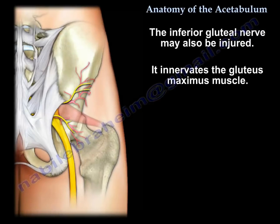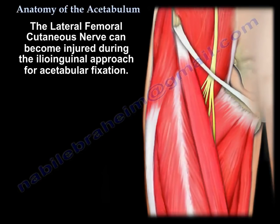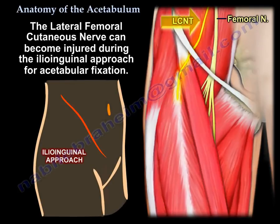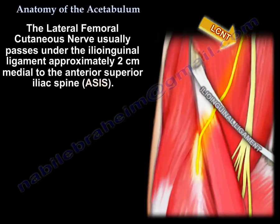The inferior gluteal nerve may also be injured; it innervates the gluteus maximus muscle. The lateral cutaneous nerve of the thigh can be injured during an ilioinguinal approach. This nerve usually passes under the inguinal ligament about 2 cm medial to the anterior superior iliac spine.